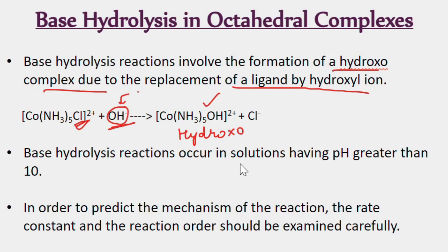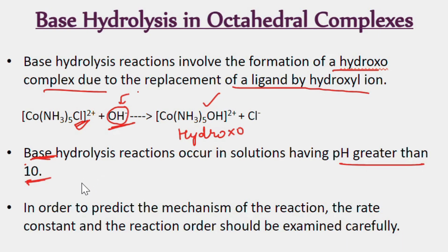Base hydrolysis reactions occur at pH greater than 10. You have studied acid hydrolysis where pH should be less than 3; in base hydrolysis, pH should be greater than 10. To predict the mechanism, you need to know the rate constant or the reaction order.